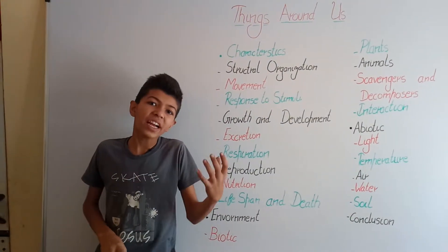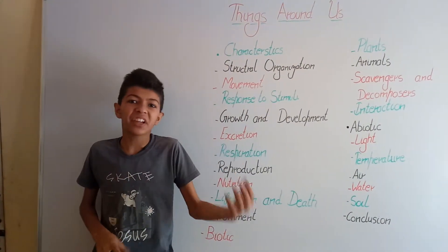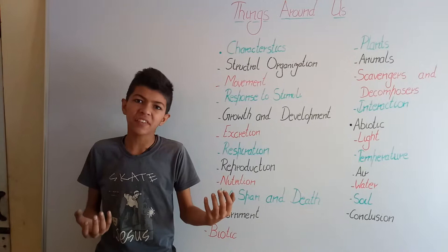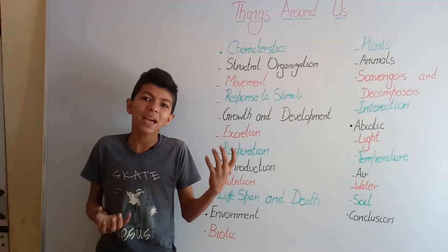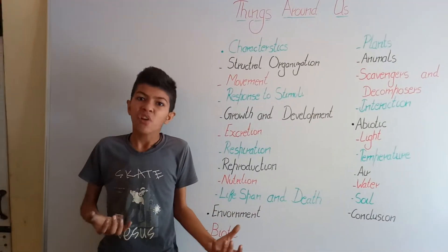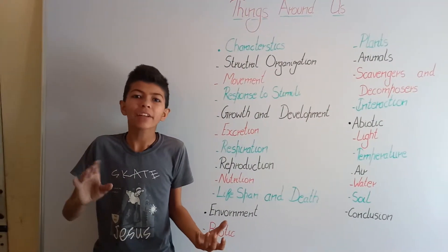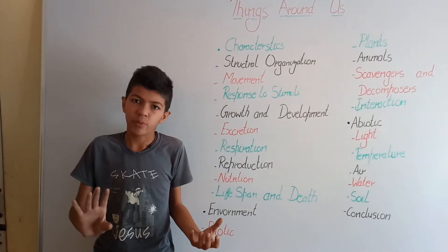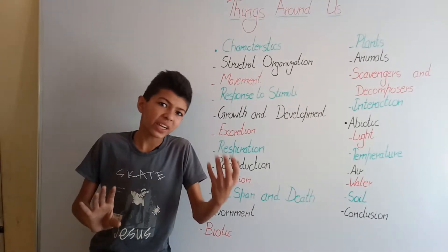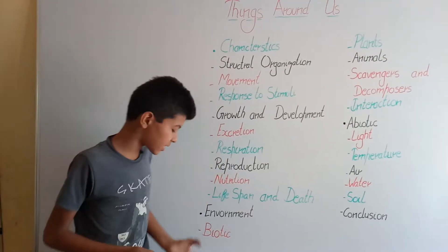How can we differentiate between living things and non-living things? Living things have some characteristics which non-living things do not have. So friends, what are these characteristics?